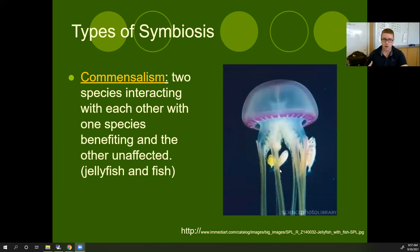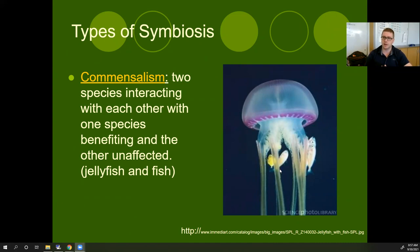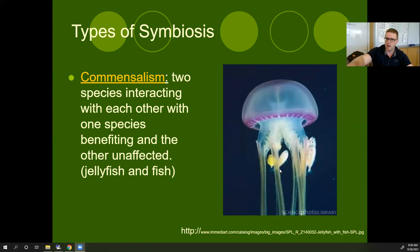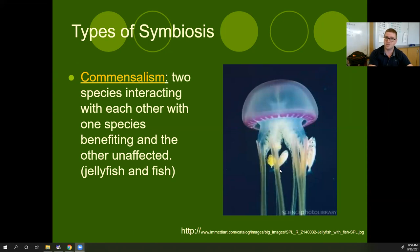Commensalism — or what I like to call my one-way street — is where two species interact and one benefits while the other is pretty much left alone. Here we see a giant jellyfish with some little feeder fish around it. When an organism gets stuck in the jellyfish's tentacles and gets envenomated by nematocysts, it becomes paralyzed. The little feeder fish then get food, but they're not doing anything for the jellyfish. The jellyfish is unaffected — this one-sided relationship is where one organism benefits and the other doesn't.